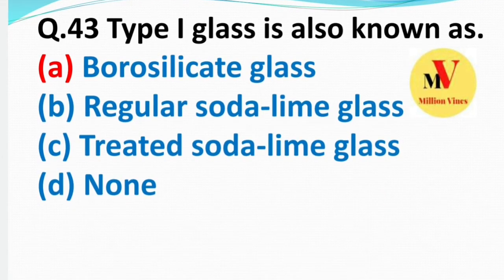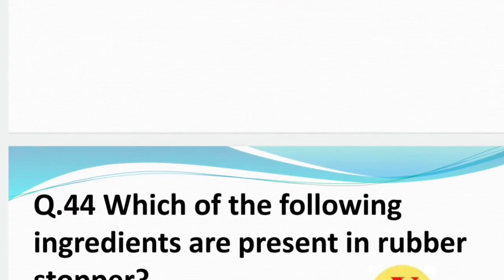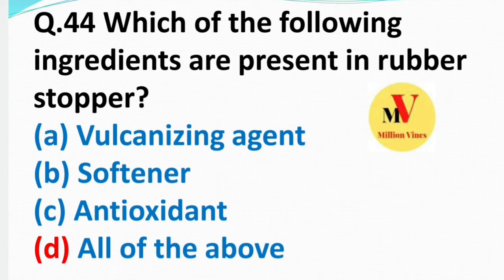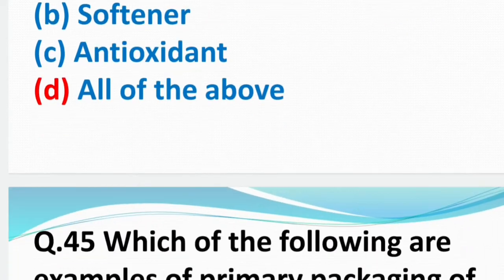Next: Type 1 glass is also known as — iska right answer rahega — borosilicate glass. Next: Vulcanizing agents, softeners, antioxidants — iska right answer D rahega — all of the above.